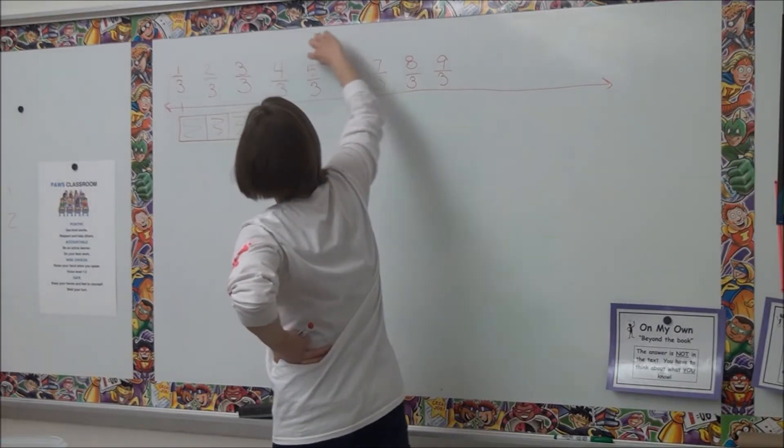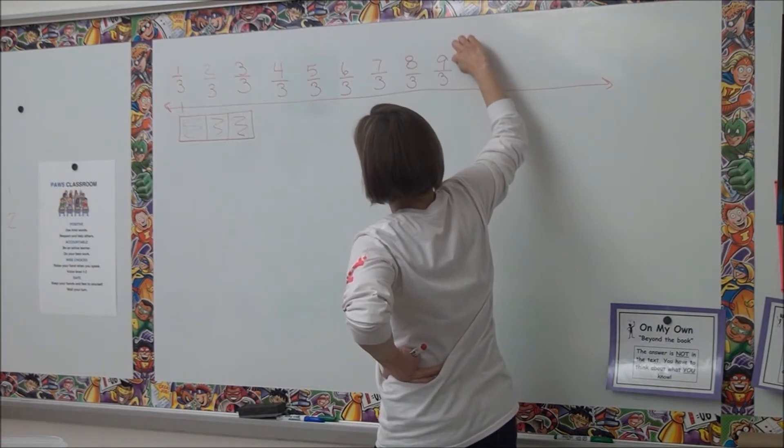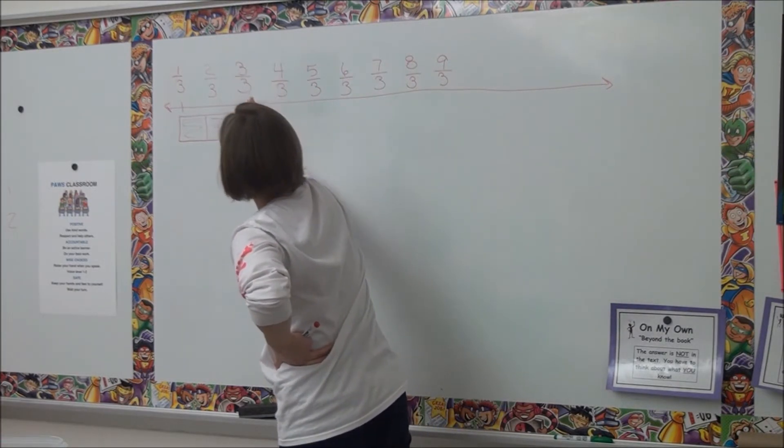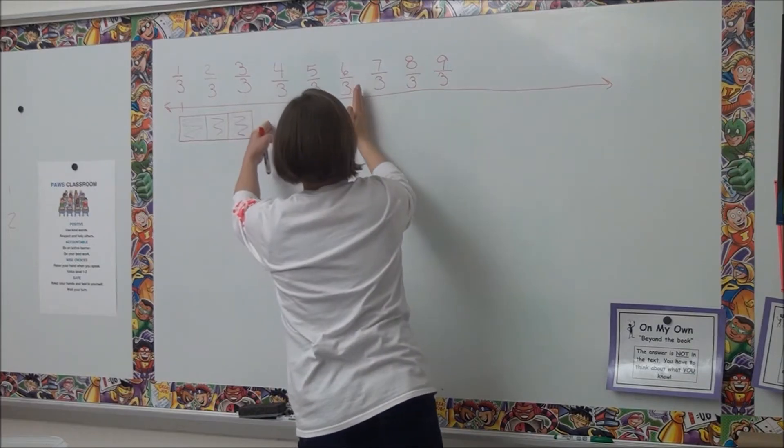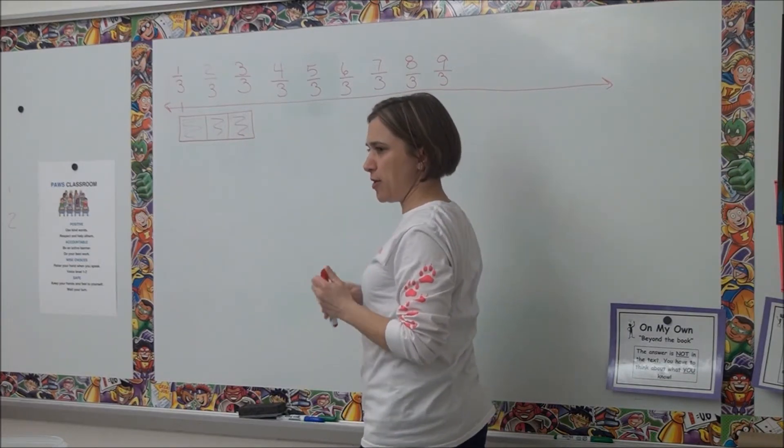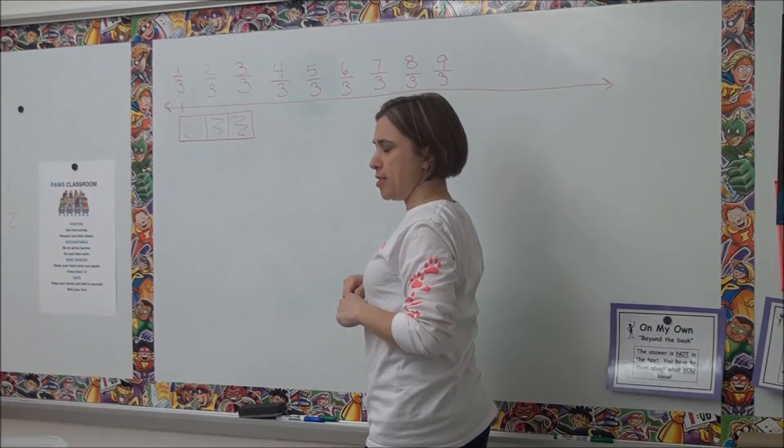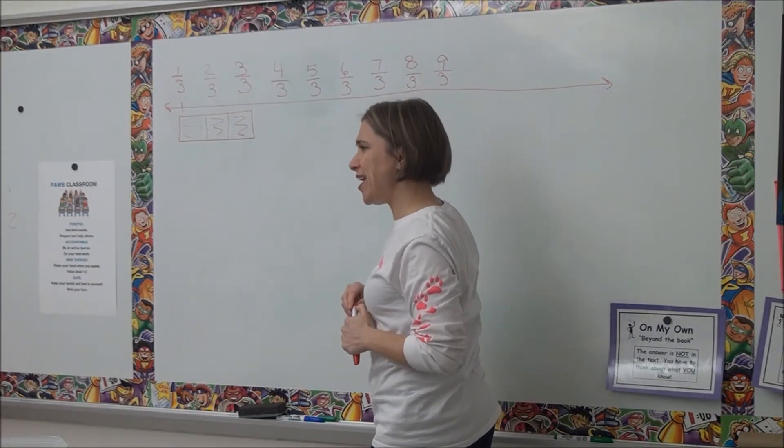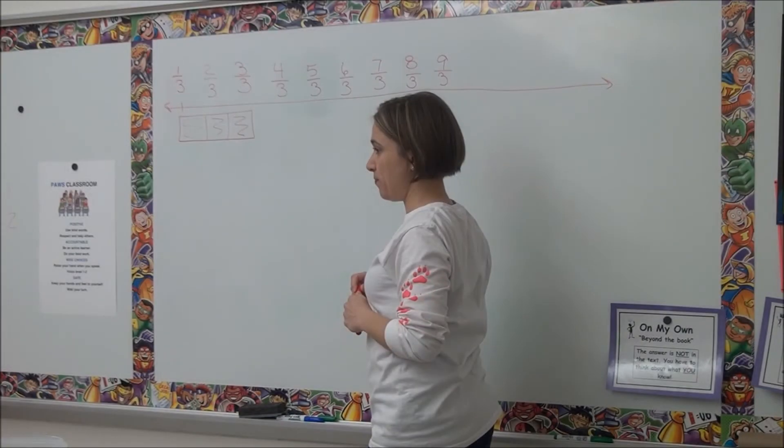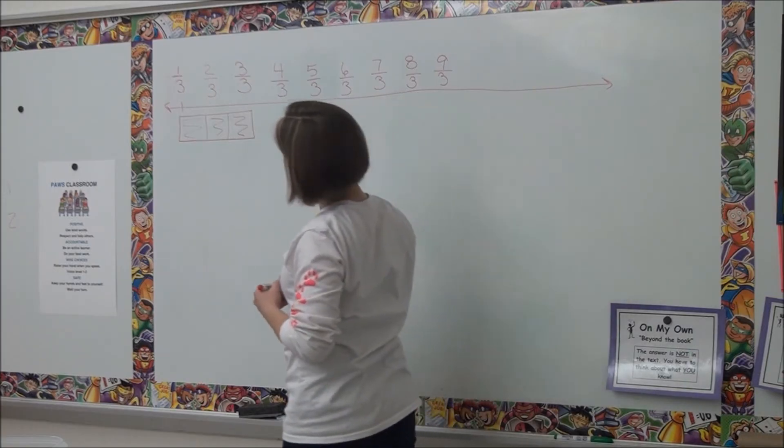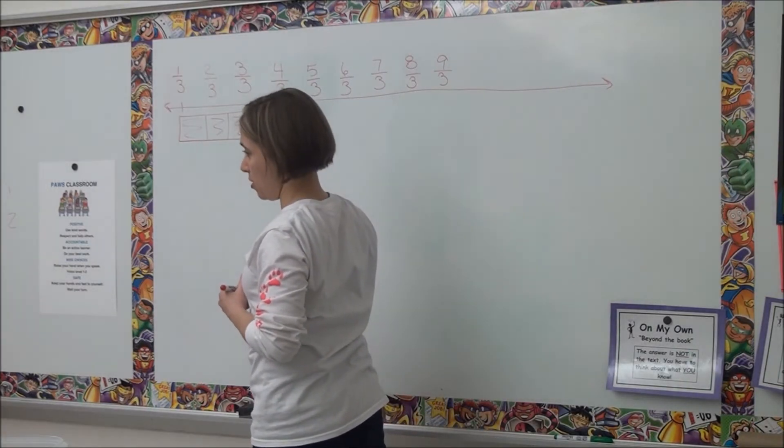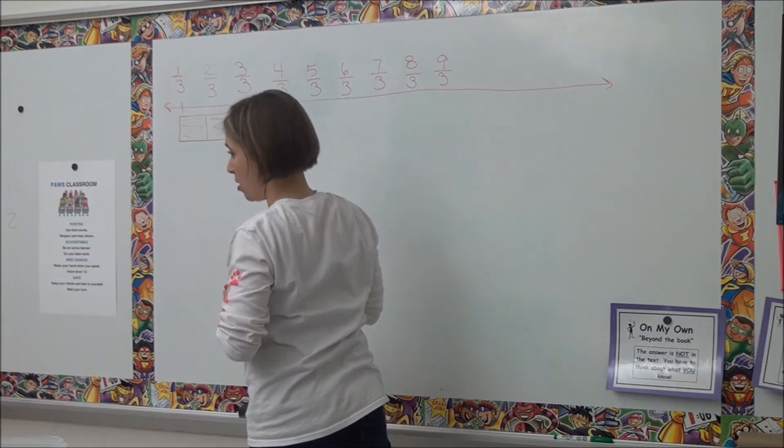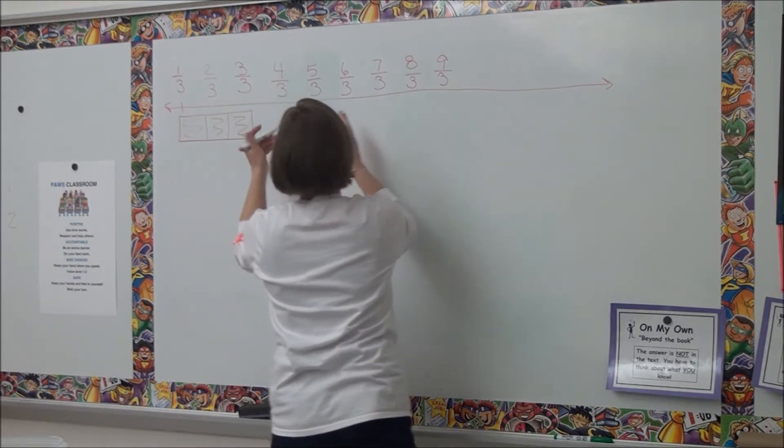So you're looking at the numerator, right? Three, six, nine. And every time we get to a three and then a six and then a nine, there's going to be a rectangle. Do you agree or disagree? Somebody tell me why you agree with that. Because each rectangle has three things. Oh, okay.